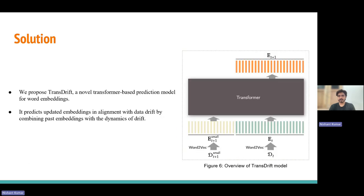We introduce TransDrift, an innovative transformer-based forecasting model for word embeddings. It learns drift patterns and anticipates adjusted embeddings in accordance with data drift by integrating previous embeddings with the evolving dynamics of drift.